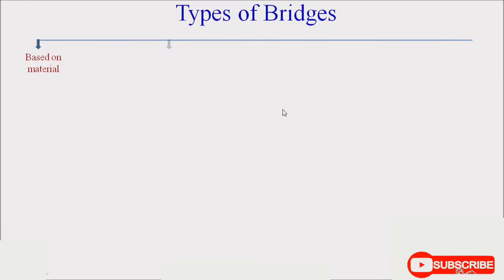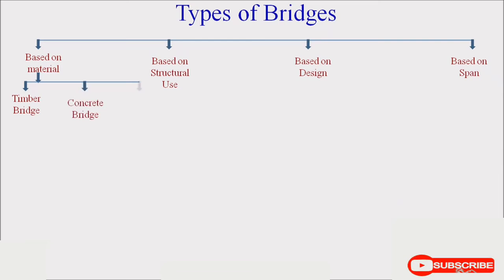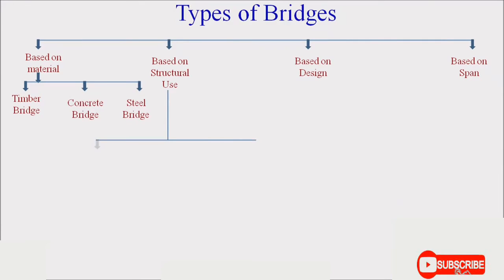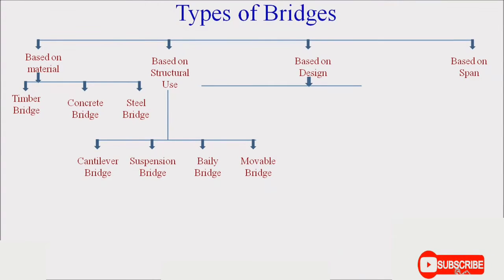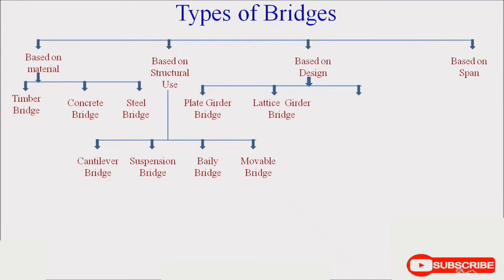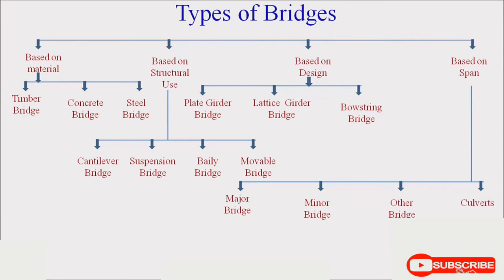These are the various types of bridges. Bridges are classified based on material, based on structural use, based on design, and based on span. Based on material: timber bridge, concrete bridge, and steel bridge. Based on structural use: cantilever bridge, suspension bridge, belly bridge, and movable bridge. Based on design: plate girder bridge, lattice girder bridge, and busting bridge. Based on span: major bridge, minor bridge, other bridges, and culverts. This is the overall classification of bridges.